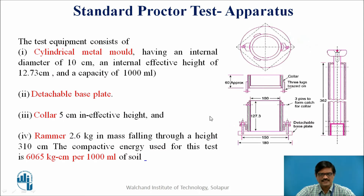These are the instruments in detail. The first one is a cylindrical metal mold having a diameter of 10 centimeters, an internal effective height of almost 127.3 mm, and a capacity of 1000 ml. Then we have a detachable base plate. There is also a collar of 5 centimeters in effective height, and a rammer of 2.6 kg mass falling through a height of 310 mm. The compacting energy used for this experiment is around 6065 kg·cm per 1000 ml.